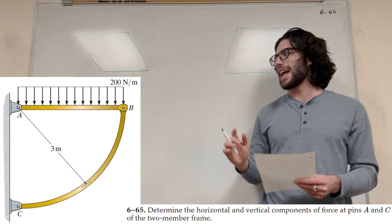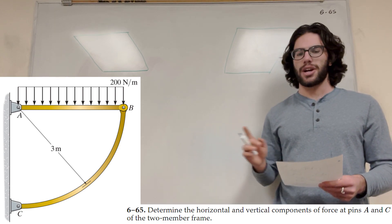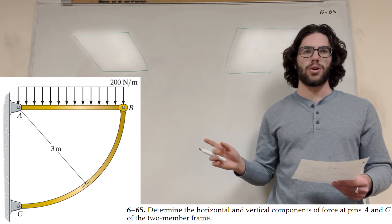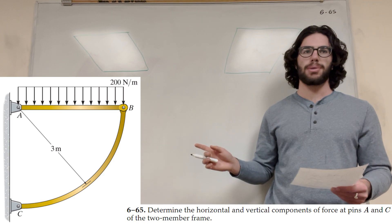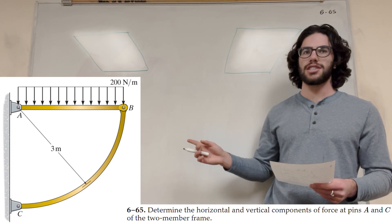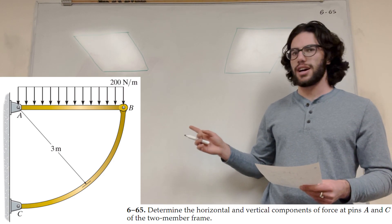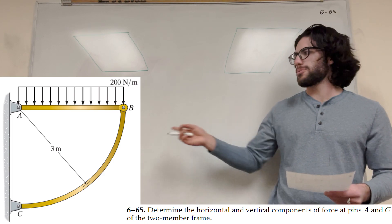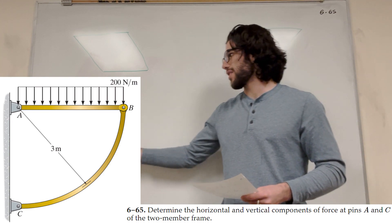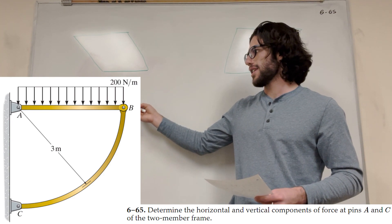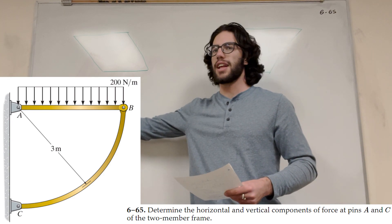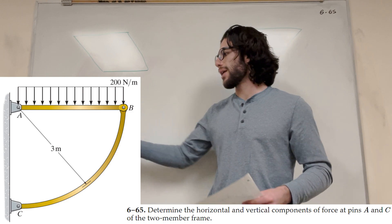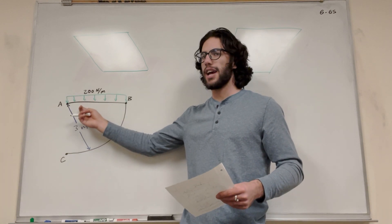What's up Cal Gang? Welcome back to statics. So we got this problem today. Our goal is to find the horizontal and vertical components of the reactions at A and C of this two-member frame. It's got this curvy thing from B to C, and then it's got this flat line from A to B. So let's go ahead and find out what's happening at C and A.